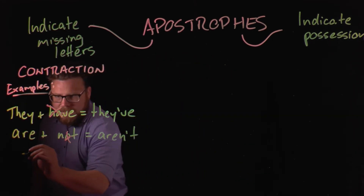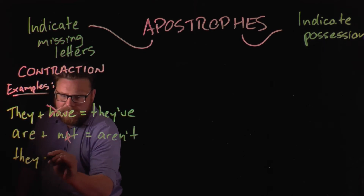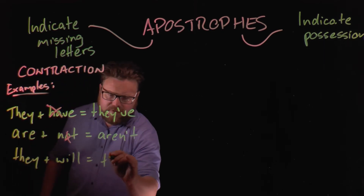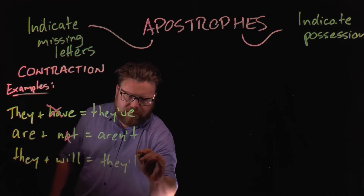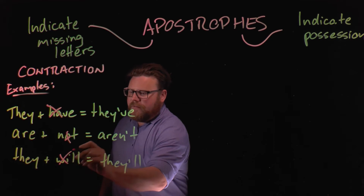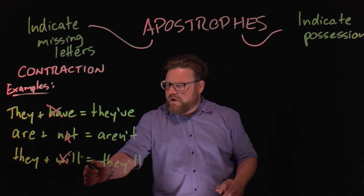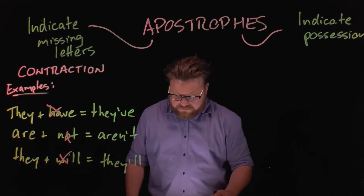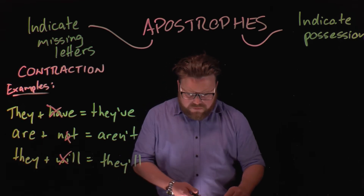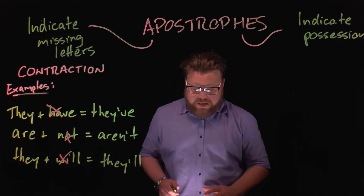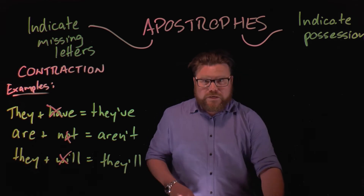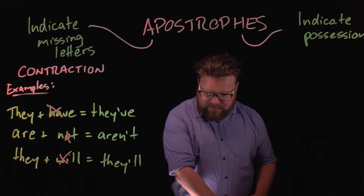Another example would be 'they' plus 'will.' The contraction using an apostrophe would be 'they'll,' and here we have cut out the letters W and I — so we've got T-H-E-Y-apostrophe-L-L. You can also use apostrophes to form contractions that look the same but actually show that different letters have been left out.